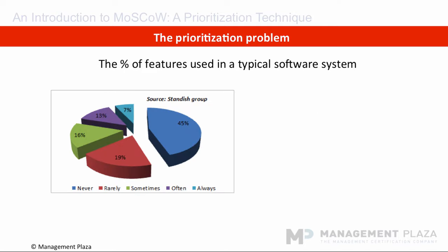This diagram shows the results of an important survey carried out by the Standish Group. It shows the percentage of features used in a typical software system after it is delivered. 45% of the functionality developed will never be used — this is just hard to believe and what a waste of effort. 19% of the functionality is rarely used, so perhaps there is no need to develop this at all.